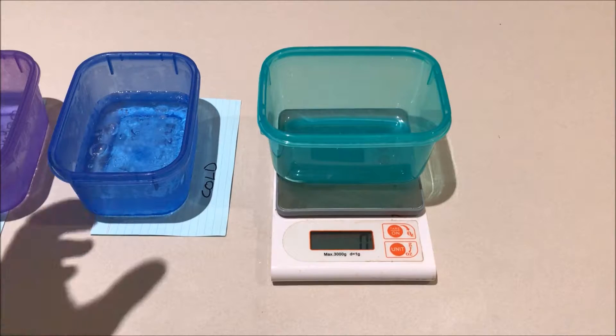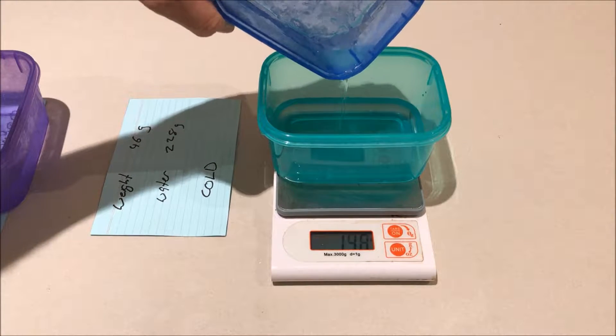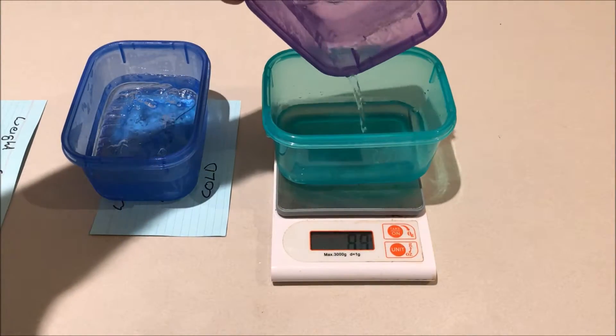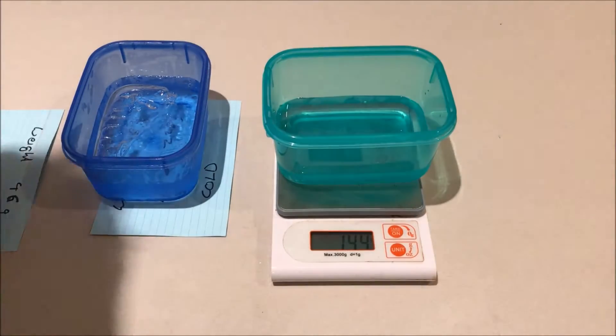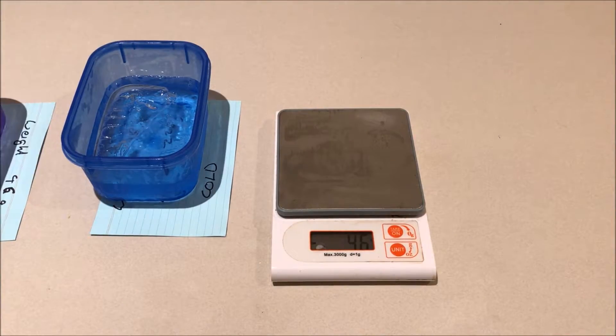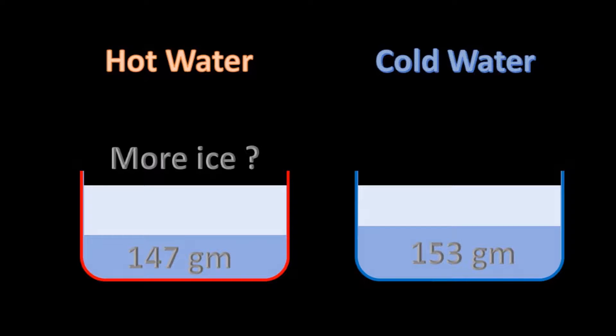Cutting a hole into the center of each ice block and extracting all the unfrozen water allowed for a comparison of exactly how much water was left unfrozen in each. And what do you know, there's clearly more water in the container that held the room temperature water. In fact there was 153 grams of water left in the cold container and 147 grams in the hot water container.